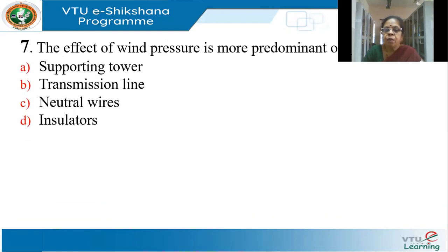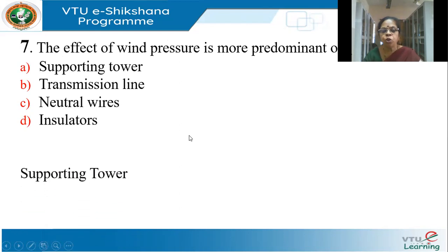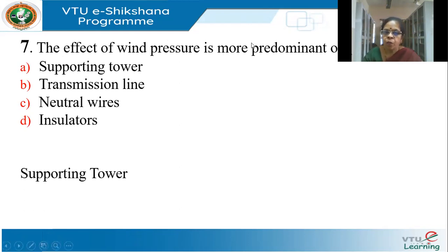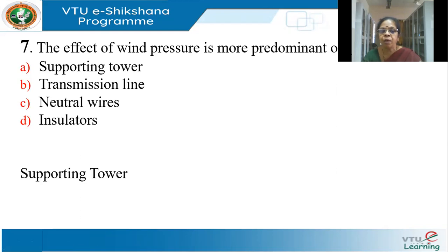The effect of wind pressure is more predominant on what — the supporting tower, the transmission line, the neutral wires, or the insulators? It's more predominant on the supporting towers. Wind can cause the tower itself to collapse, and cross arms can come off poles. The effect of ice, on the other hand, is more prominent on the lines.